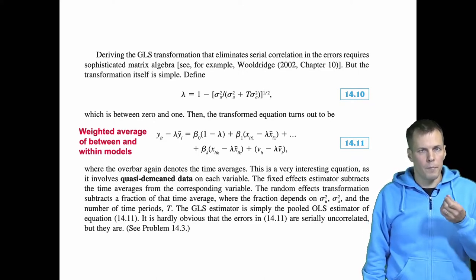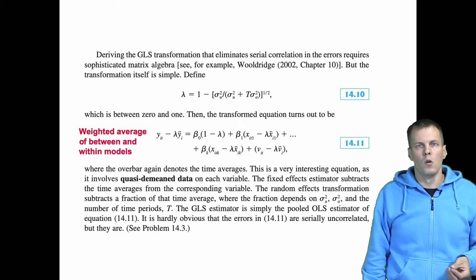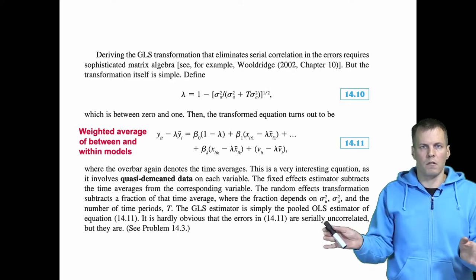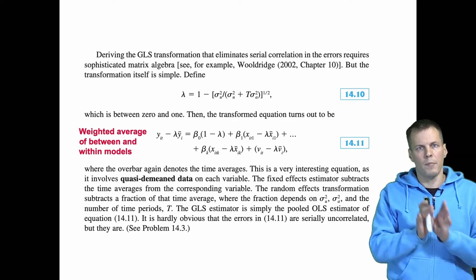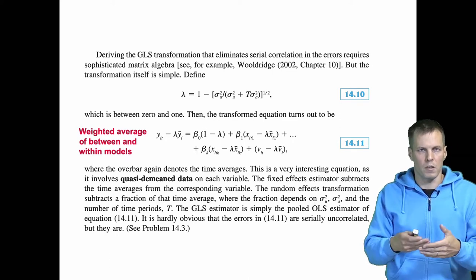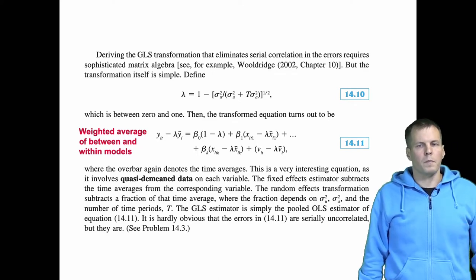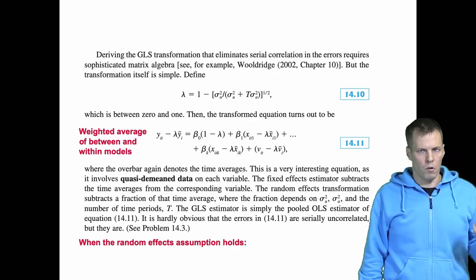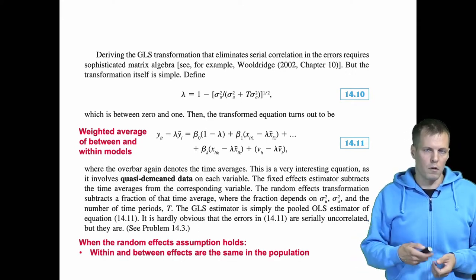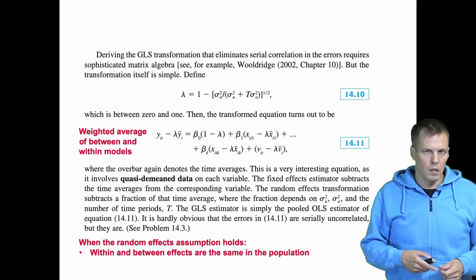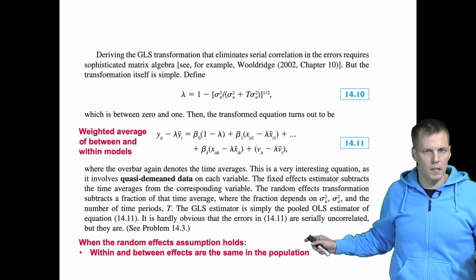This equation shows that the GLS random effects estimator is a weighted average of the between regression and the within regression. The within regression estimates using cluster mean centered data — which is what GLS fixed effects does — and the between regression is the regression of cluster means on each other. When the random effects assumption holds, the within and between effects are the same, and that is the key idea behind GLS random effects estimation.